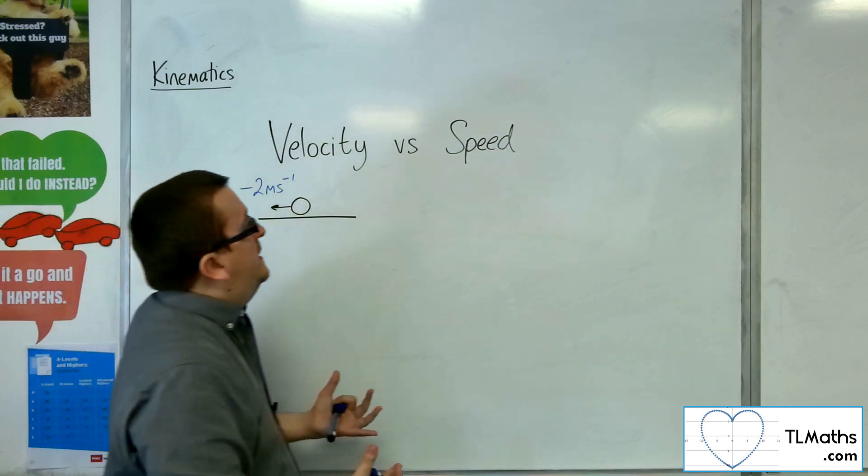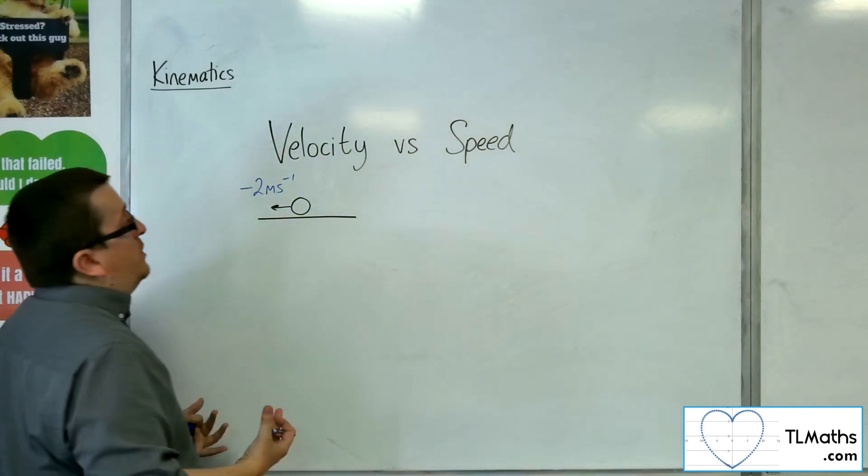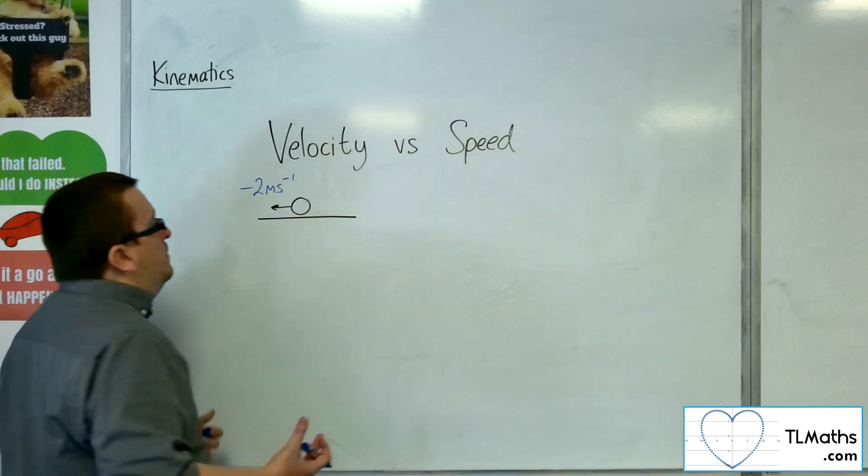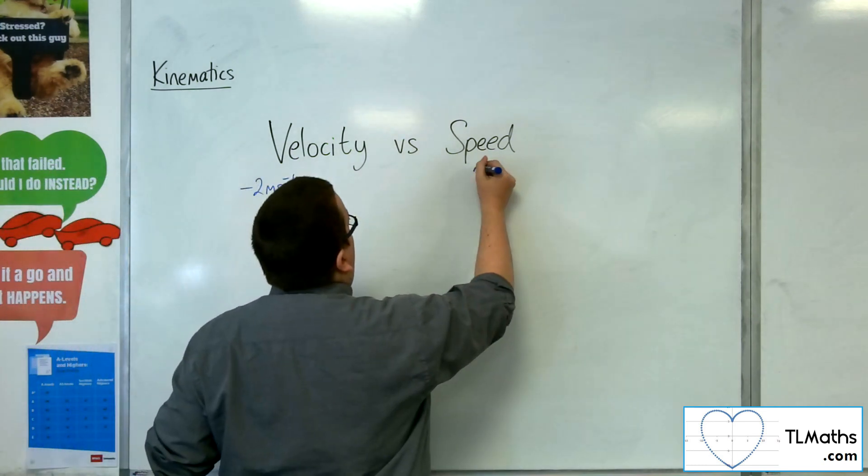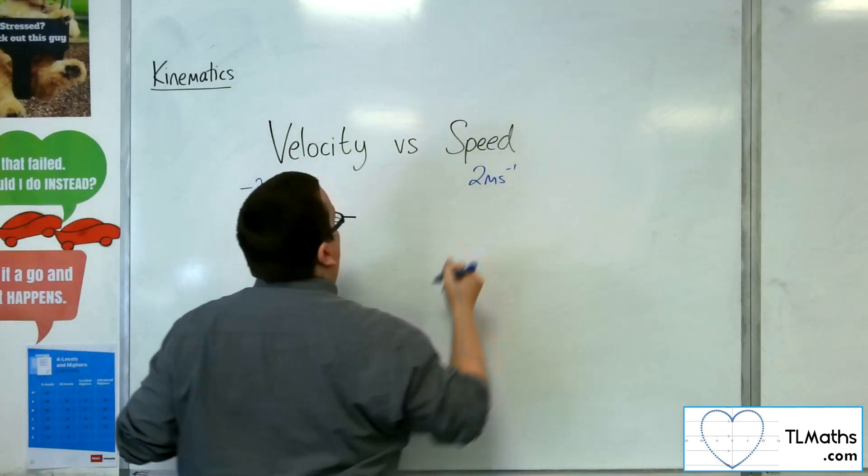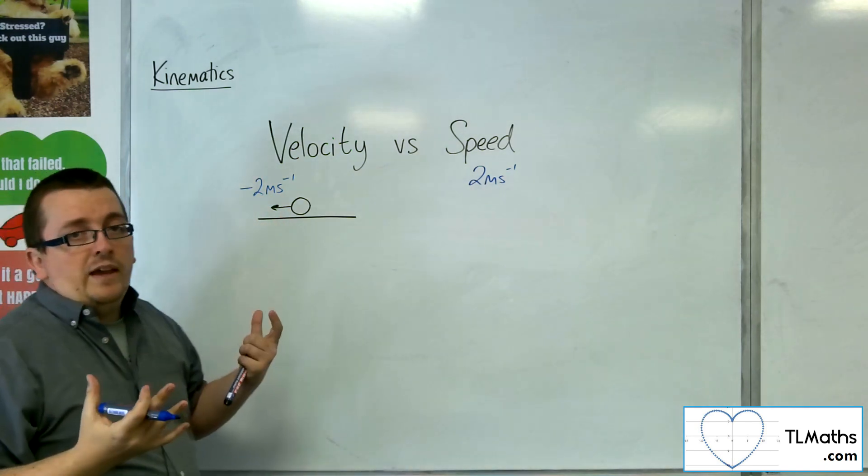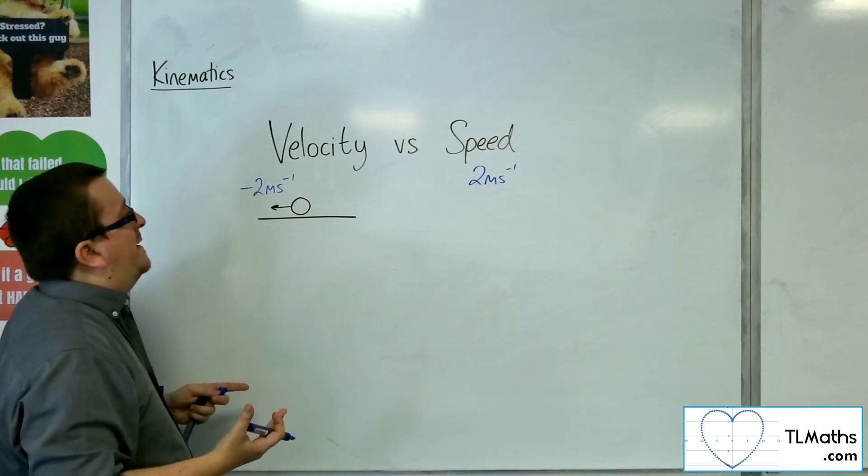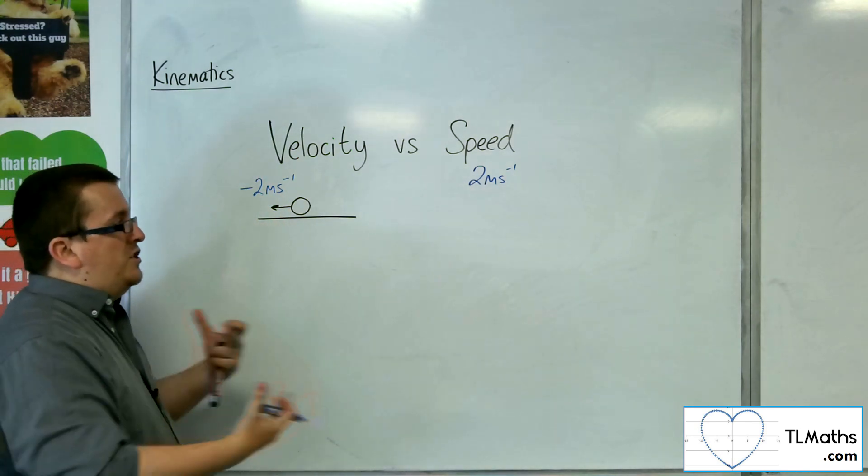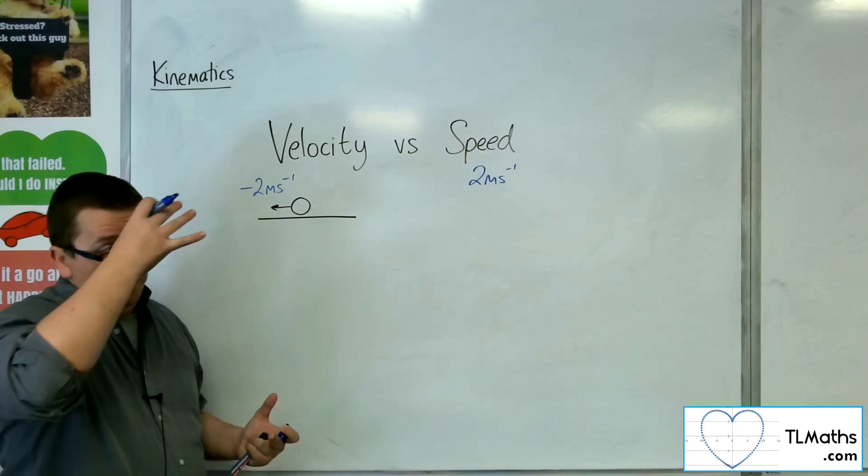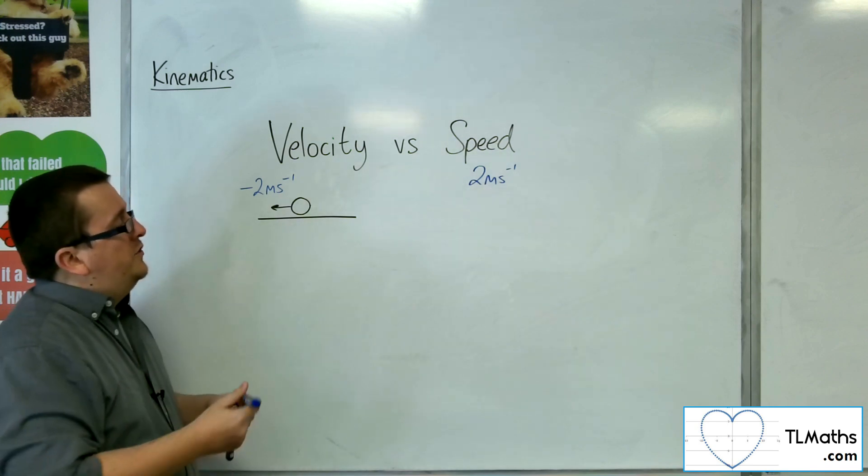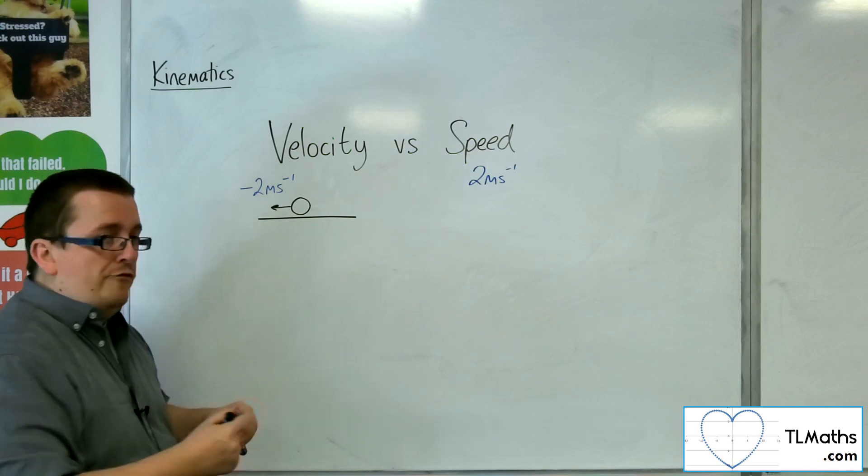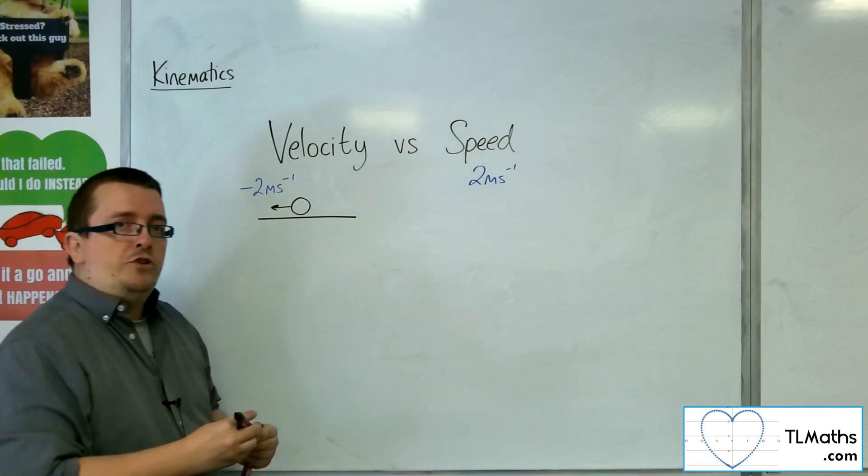Now speed, as I said, would be the magnitude of the velocity. So the particle speed here would be 2 meters per second. Speed is a scalar quantity. So speed does not contain any kind of direction involved. Now if you then start talking about average velocity and average speed.